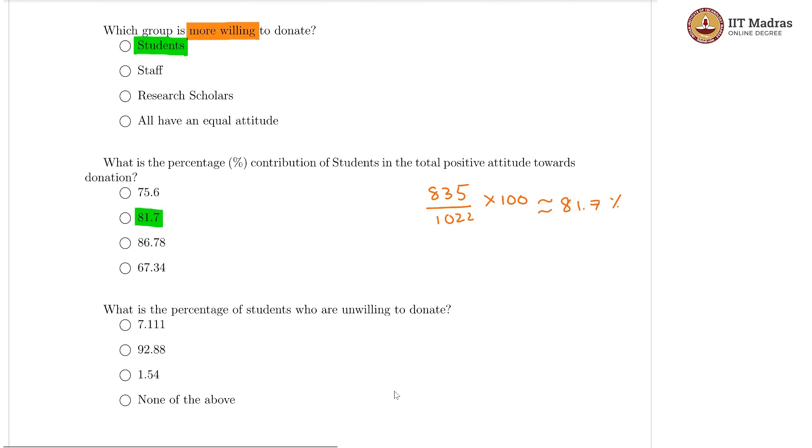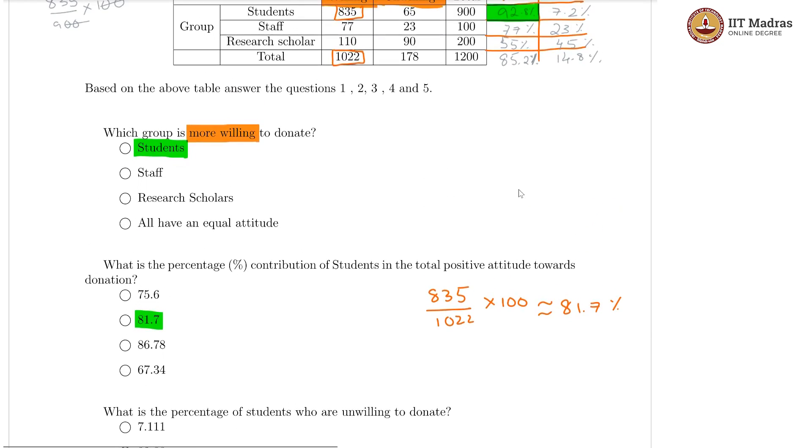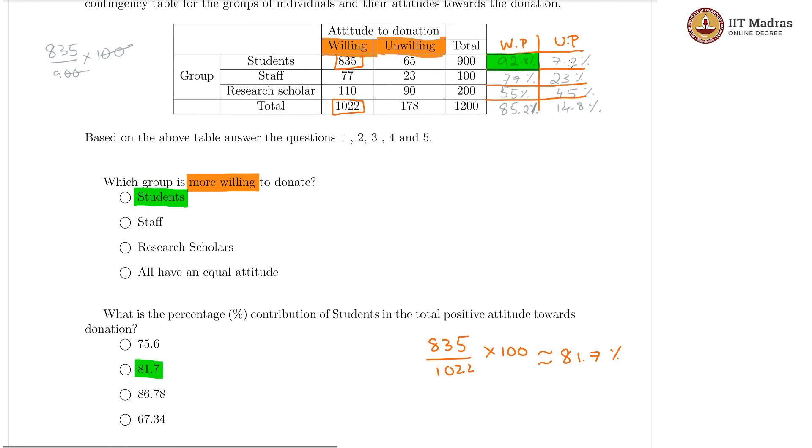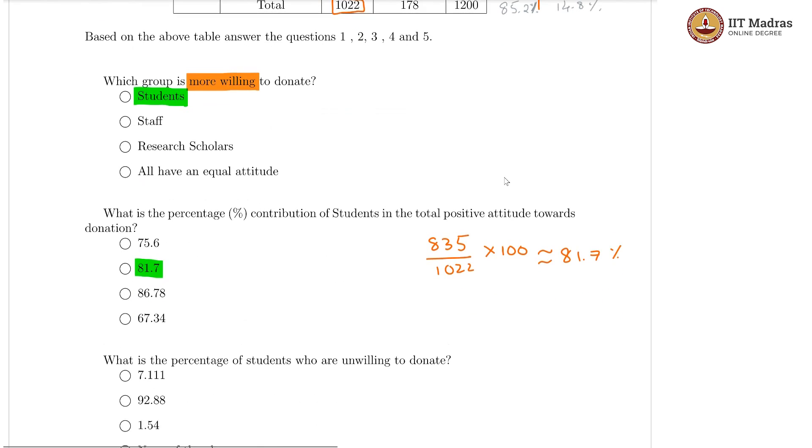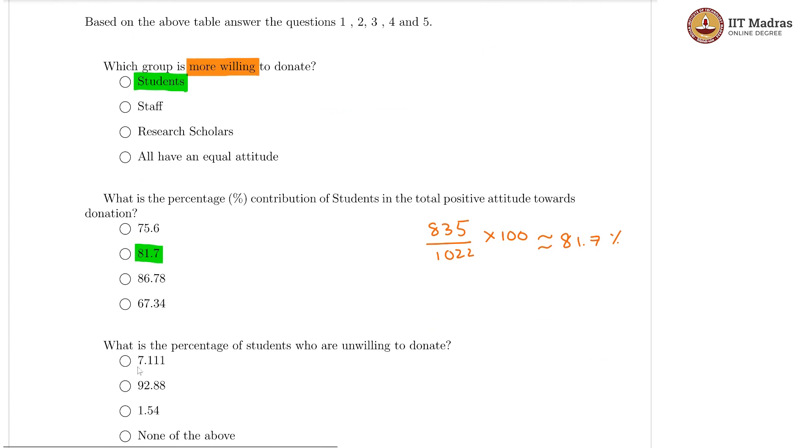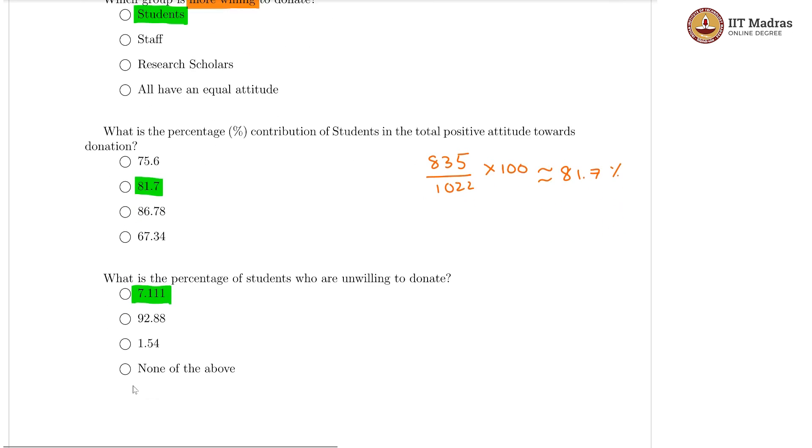Moving further, what is the percentage of students who are unwilling to donate? This we had already calculated. 7.2 we had taken as the approximation, but it is actually supposed to be, I believe, 7.11. So, yeah, that should be our closest answer.